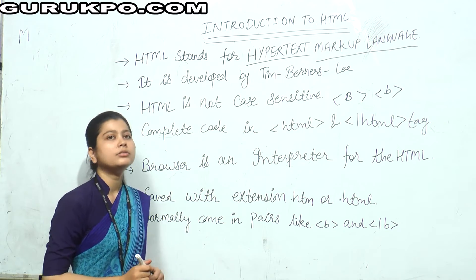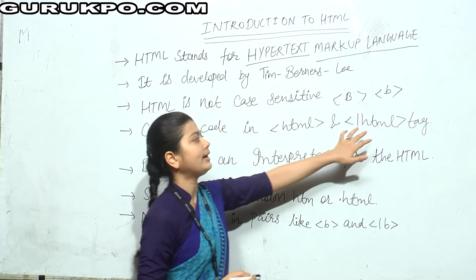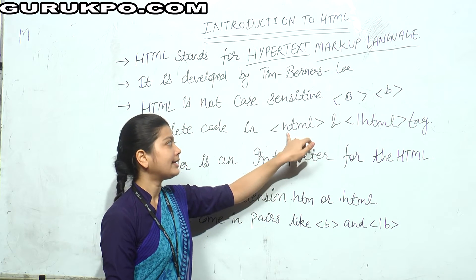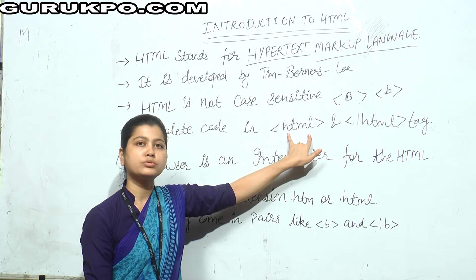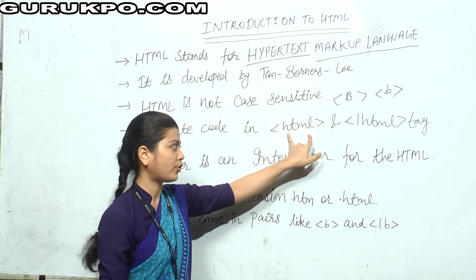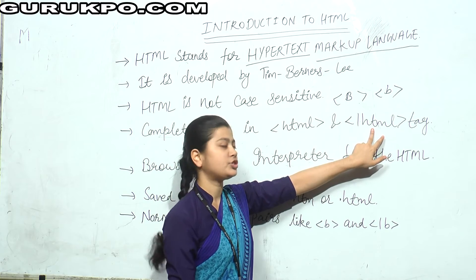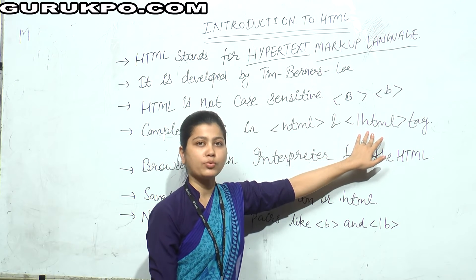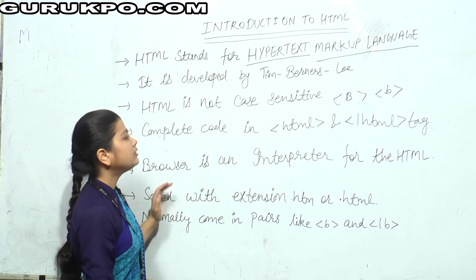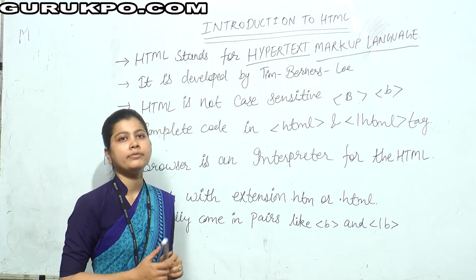The complete HTML code is written within the opening HTML tag and closing HTML tag. The HTML tag tells the browser that this is the starting of an HTML document, and the closing tag tells the browser that this is the end of the document. The HTML code is interpreted by the browser.